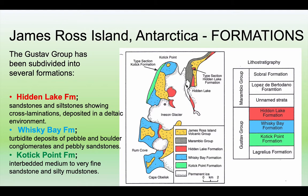The Whiskey Bay formation is turbidite deposits — submarine avalanches — depositing quite coarse clastic sediments. The Kotick Point formation is probably in a lower energy marine environment, with interbedded medium to fine sandstones and some silty mudstones — much finer grain material. So you can see that each of these formations is being deposited in a different environment, all related to perhaps the same type of area but with different sub-environments depositing these lithologically distinct units.